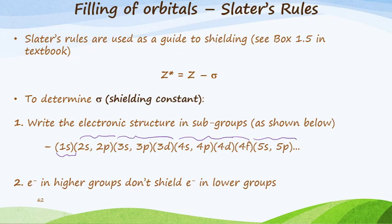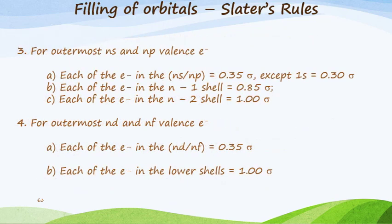For the outermost ns and np valence electrons, each of the electrons in the (ns/np) equals 0.35σ, except for 1s which becomes 0.30σ. For each of the electrons in the n-1 shell we get 0.85σ, and then for each of the electrons in the n-2 shell we get 1.00σ. Those are for elements that have ns and np.